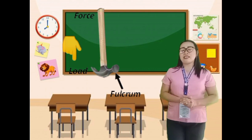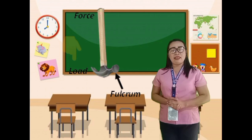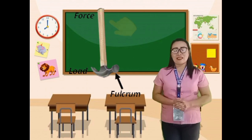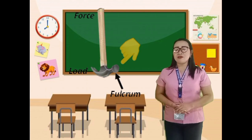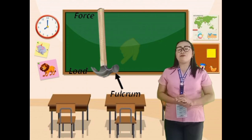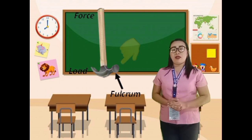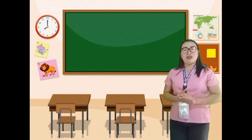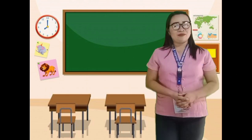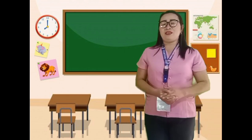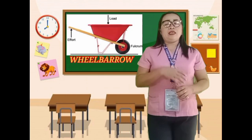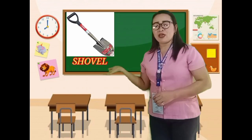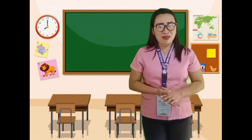Resistance is a force that is being lifted by the effort. Effort is a force that lifts the resistance. And the fulcrum is the fixed movable point where the rigid bar moves. Can you give me another example of a lever? Very good! The wheelbarrow, the bottle opener, and shovel are examples of a lever.